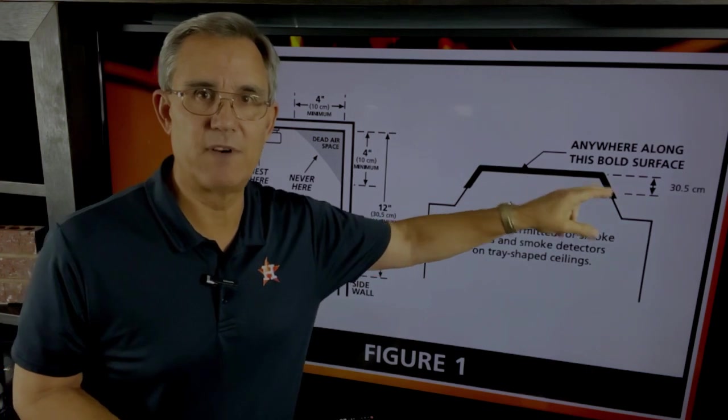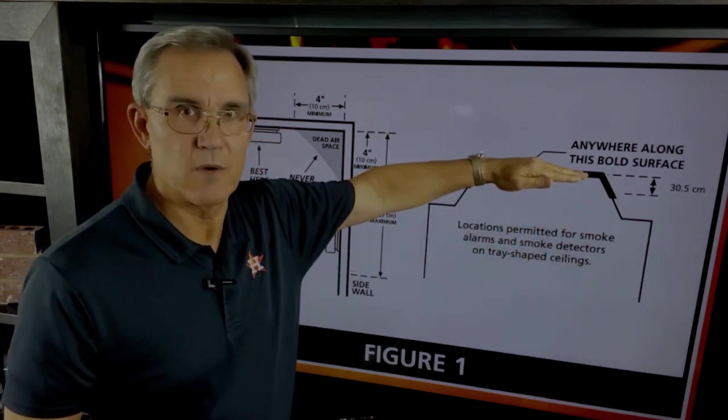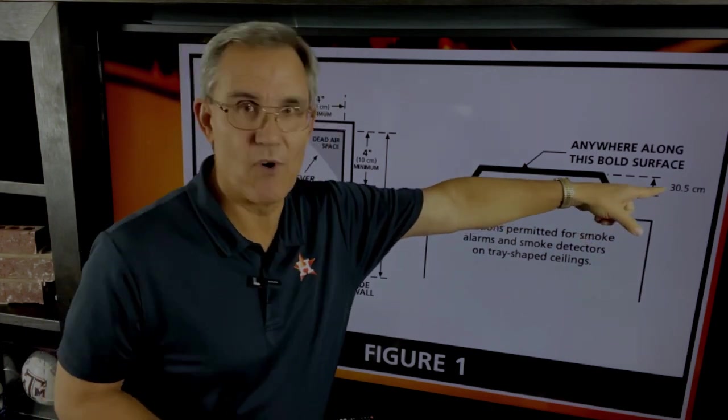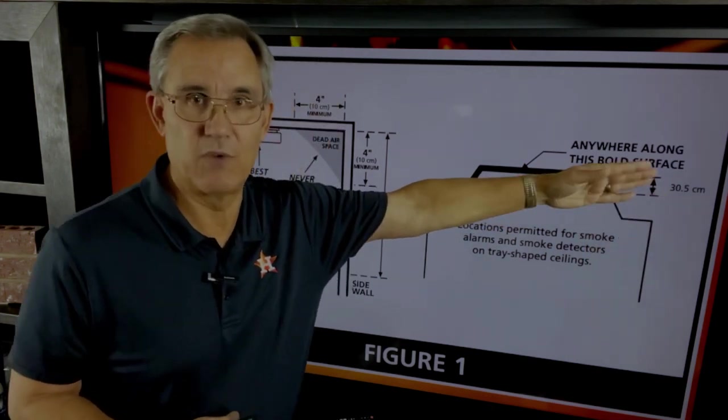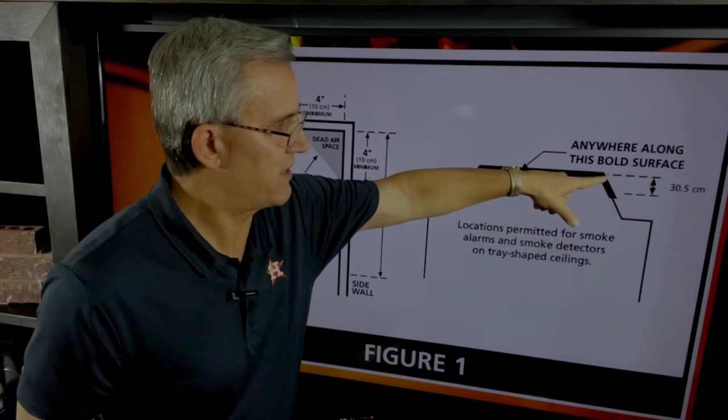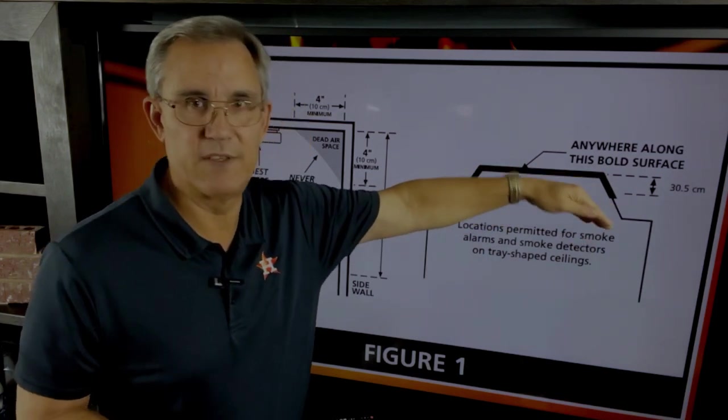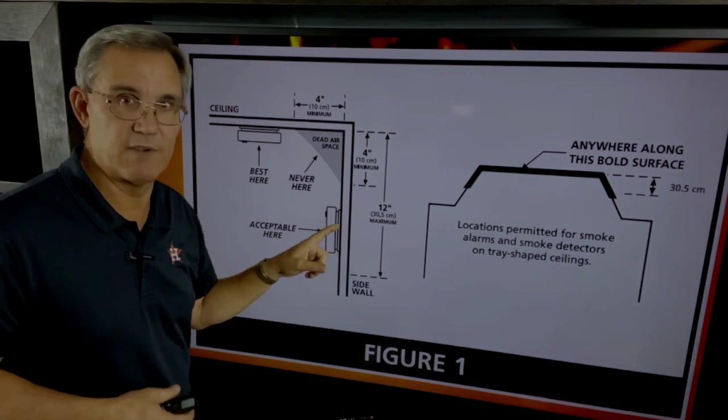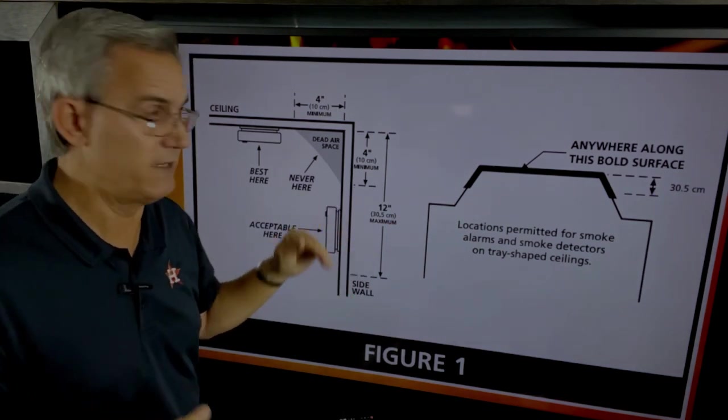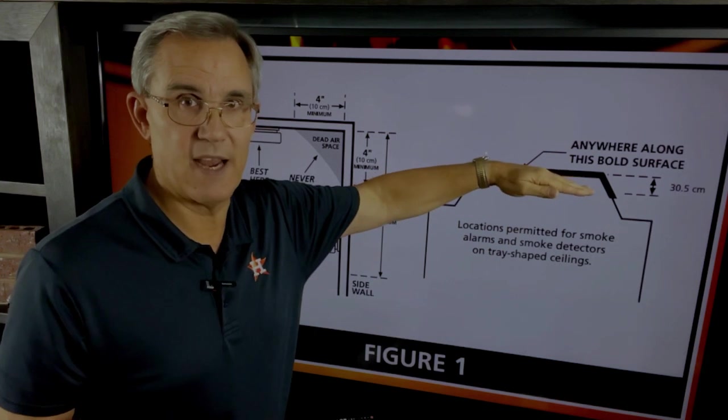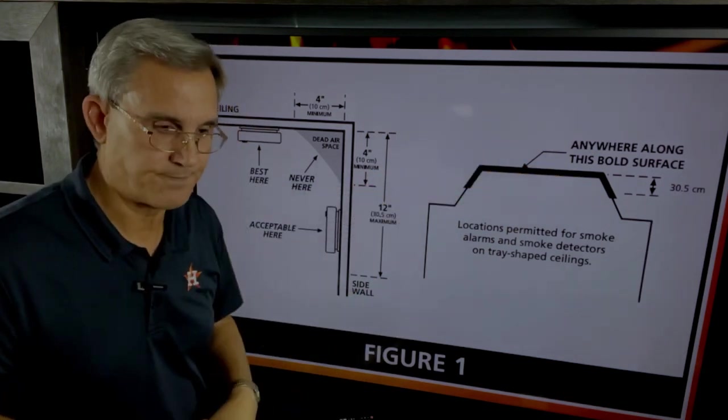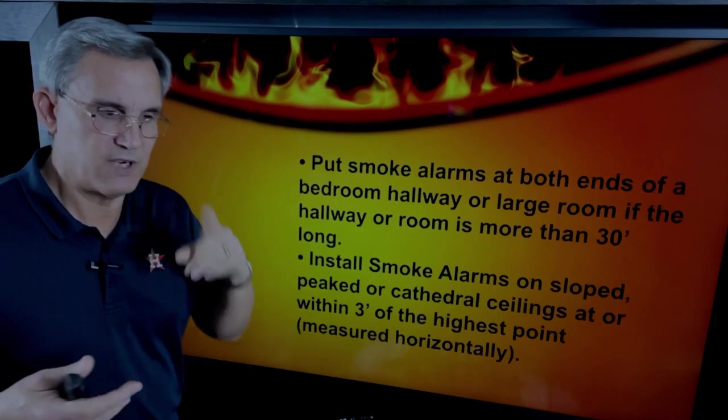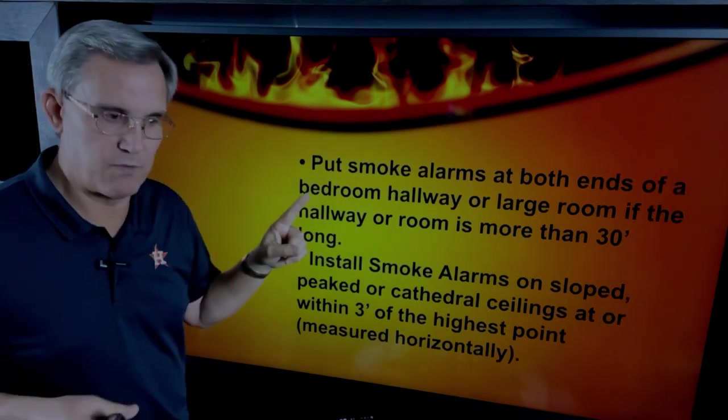You want to be outside the four inches and outside the four inches here, but definitely within 12. And then they say if you have a tray ceiling, a coffered ceiling, whatever you want to call it, again they show the zone where you have to be. And this one they call centimeters, but I'll tell you that's 30.5 centimeters, which is about 12 inches. So if you were to measure down that slope, it's about 12 inches again from the high point, which kind of lines up with this diagram.